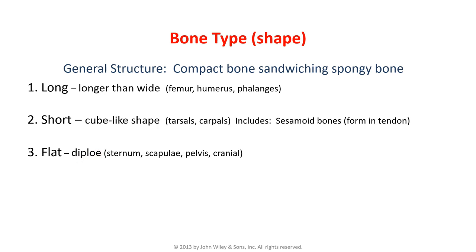Flat bones, sometimes called diploe, include the sternum, scapulae, flat parts of the pelvis, and cranial bones — they have a very wide X and Y axis and are relatively thin in the Z axis. Irregular bones don't conform to standard categories; vertebrae fall into this group — they are unique in shape and structure.